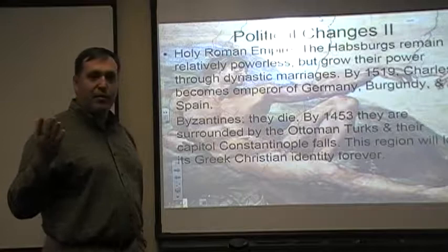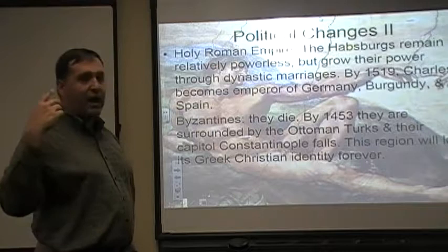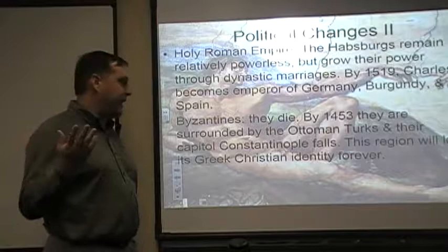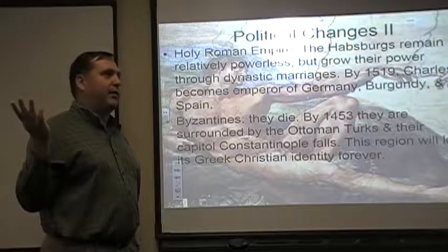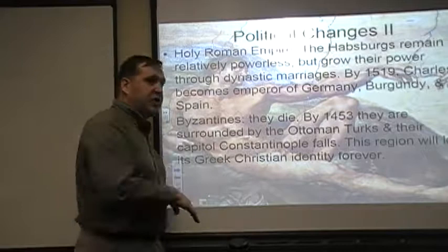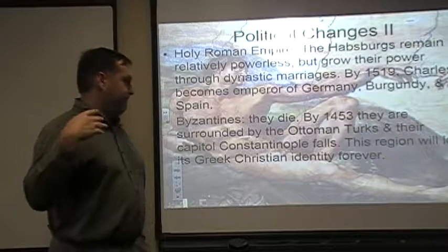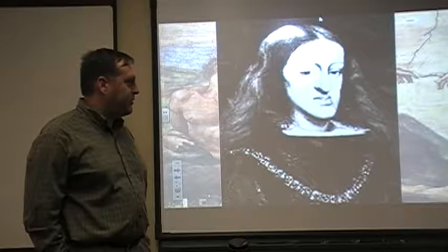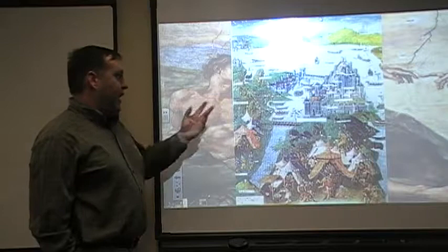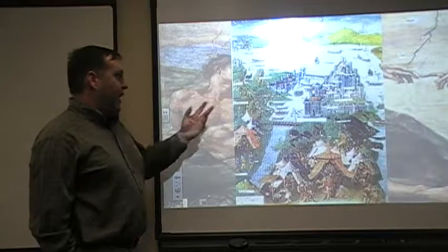The Byzantine Empire in western Asia was going to die. By 1453, completely surrounded by the Ottoman Turks, all that was left was the city of Constantinople itself — and that year Constantinople fell. The Turks overwhelmed the fortress city, and the region that had been Greek since centuries before Christ and Christian since the 1st and 2nd centuries AD lost its Greek Christian identity forever. This is one of the Habsburg emperors — it's unfortunate what not marrying outside your family might do to you. And here is the siege of Constantinople itself, showing the Turkish army and navy surrounding the city until it was forced to surrender.